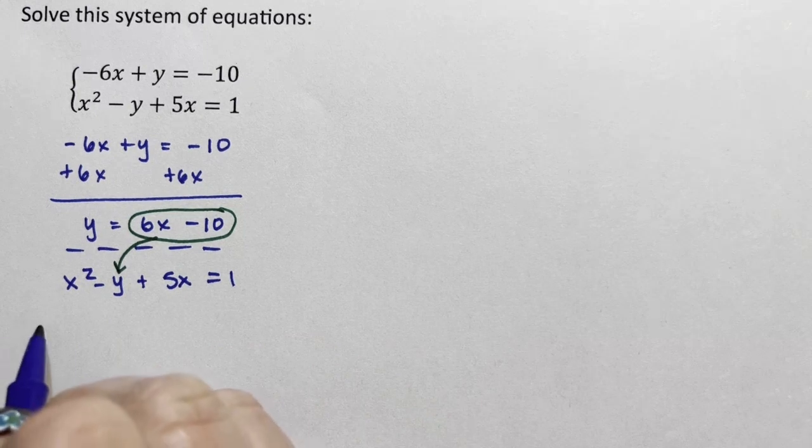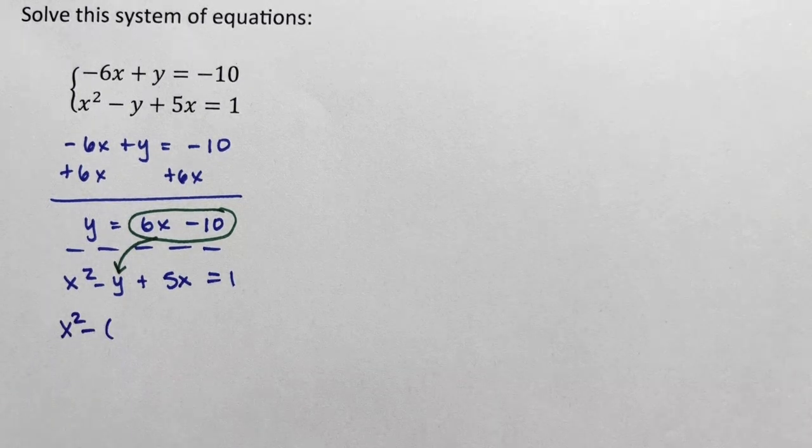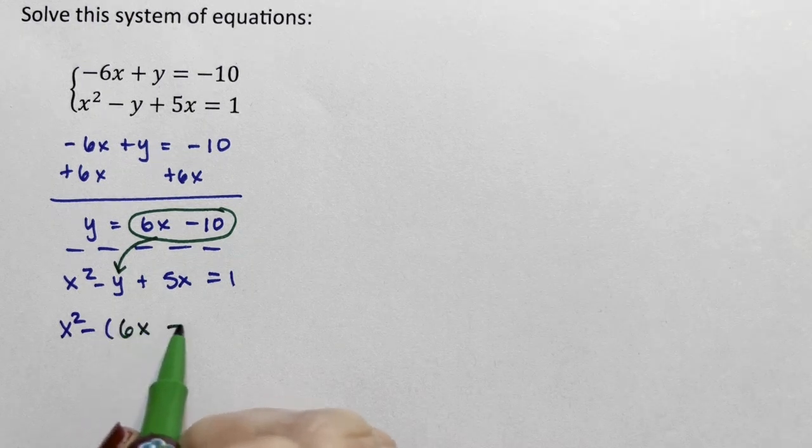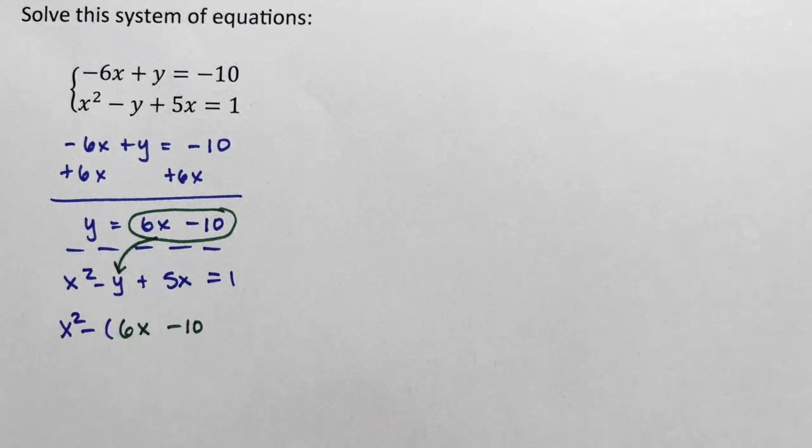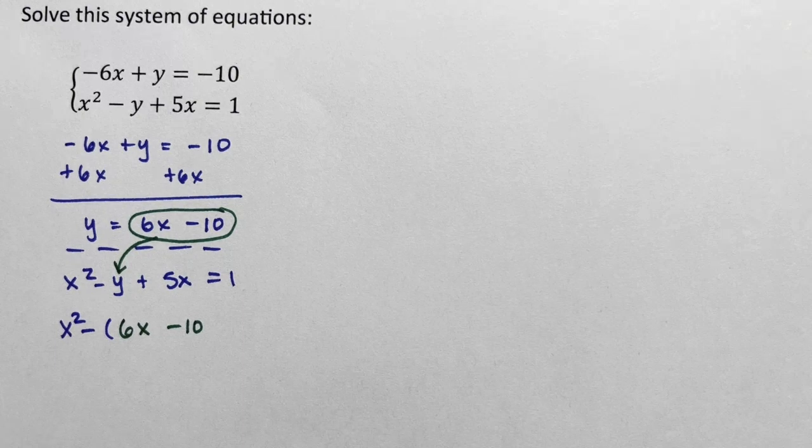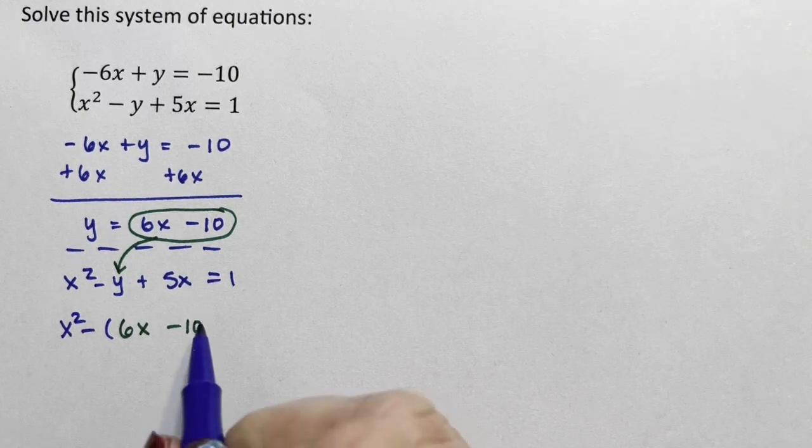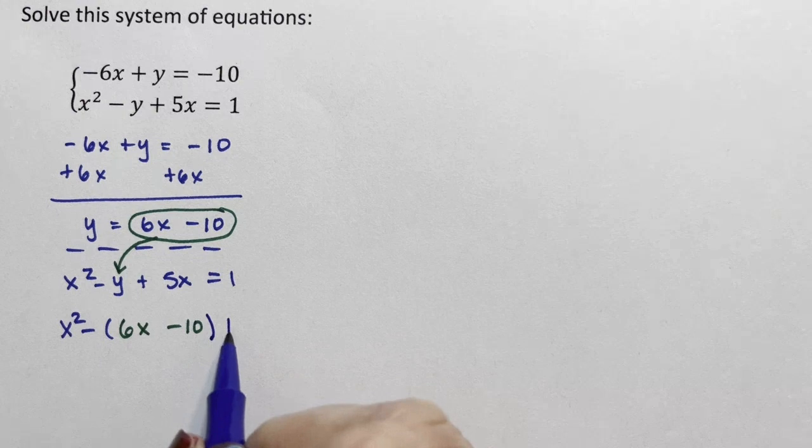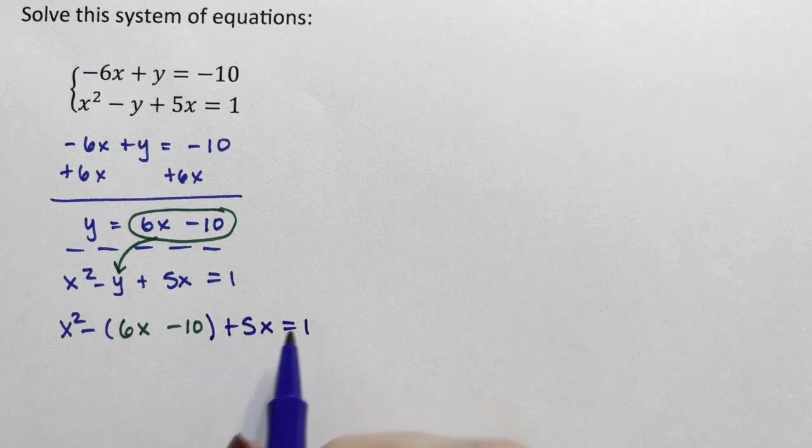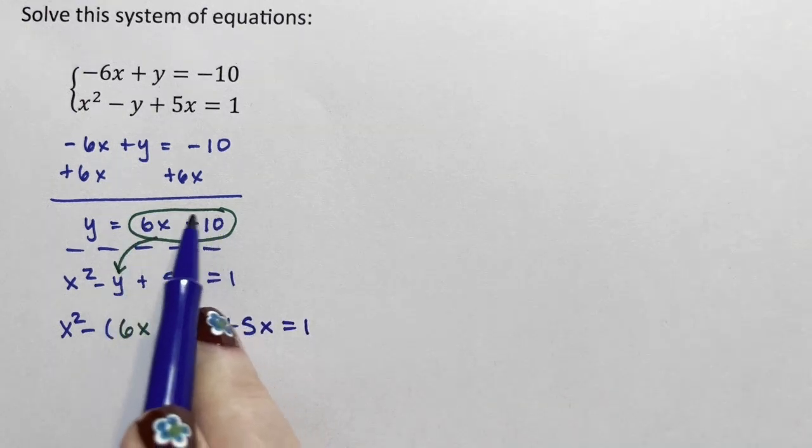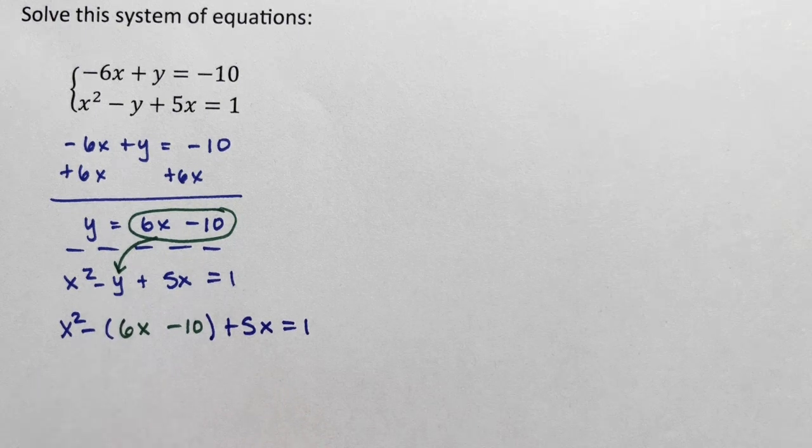and I'm going to substitute it in for the y of the second equation. So that I have x squared minus, and instead of that y, I'm going to replace it with 6x minus 10, putting the y of the first equation into the y of the second, plus 5x equals 1. So I substitute the 6x minus 10 into the y of the second equation.